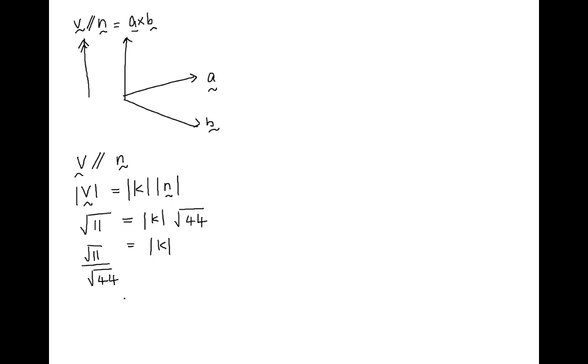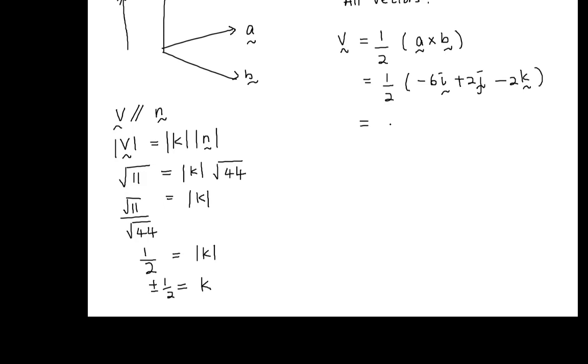Then V can be in both directions. K will be both directions, so k equals plus or minus 1 over 2. Then we find all vectors by substituting back the vectors and multiplying with 1 over 2, positive and negative.